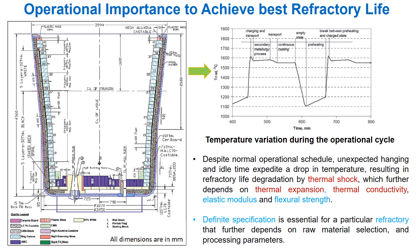The next question is: can we design a temperature gradient — that is delta T — for a particular refractory? And what will happen if that refractory experiences more delta T than the designed one?